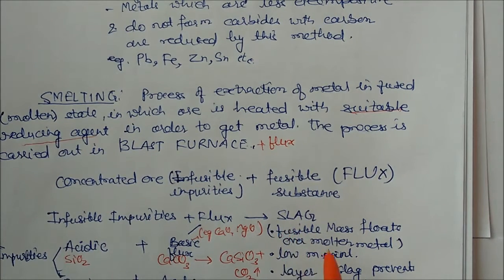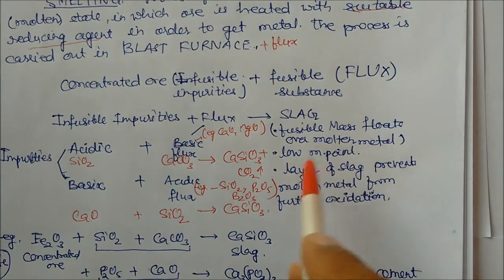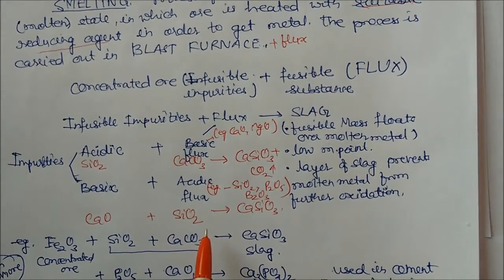What is the advantage of this slag? First, slag floats on molten metals. It has low melting point and this layer of slag prevents the molten metal from further oxidation. So these are the advantages of slag.